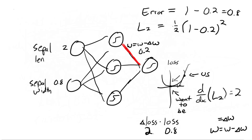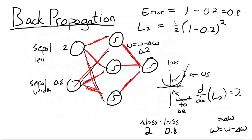I'll go through the actual math on how to get this derivative in another tutorial. For now, this is all we need to understand how a neural network works. We do this for all the weights between the hidden layer and the output layer, and then we back-propagate — taking that error and multiplying it backwards through each weight so we know how much error each node contributed. In the hidden layer you don't have a predicted answer to compare to, so instead we back-propagate the error to measure how wrong each node is.